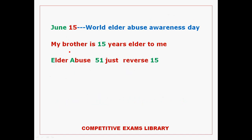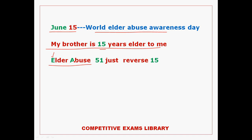Next, June 15th — World Elder Abuse Awareness Day. So they need two code words. First, my brother is 15 years elder to me, so Elder Abuse Awareness Day. My brother is 15 years elder — 15 years elder to me. Elder is highlighted. So you need to choose the alphabet number 51 — just reverse 15. Reverse use: E is 1, so June 15th, World Elder Abuse Awareness Day.